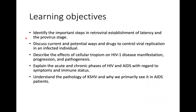Learning objectives for this lecture: when we are done here, I want you to be able to identify the important steps in retroviral establishment of latency and the provirus stage — what parts of the viral replication cycle are important for the virus to remain in your cells forever. To discuss current and potential drugs to control viral replication. Describe the effects of cellular tropism on HIV-1 disease manifestation, progression, and pathogenesis. Explain the acute and chronic phases of HIV and AIDS with regard to symptoms and immune status. And to understand the pathology of KSHV, Kaposi's sarcoma-associated herpes virus, also called human herpes virus 8, and why we primarily see it in AIDS patients.